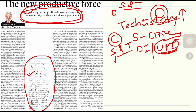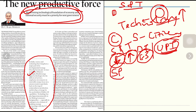Renewable energy is another focus area where science and technology has played a very big role — it has the potential to lower adverse climate emissions and improve India's energy security. The focus on the semiconductor mission is also key to achieving self-reliance in the electronic vehicle industry and other renewable industries.